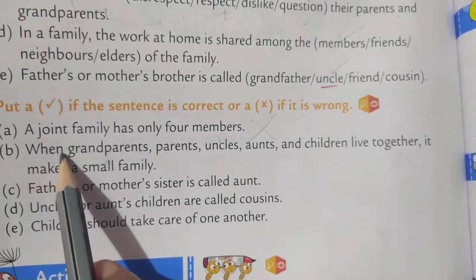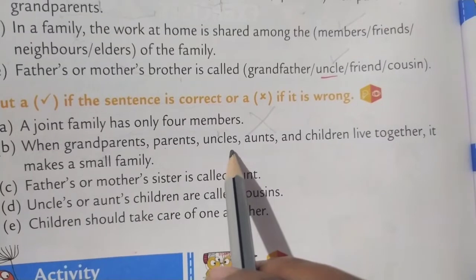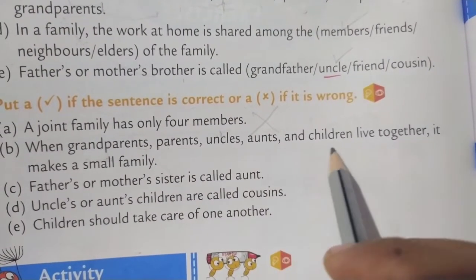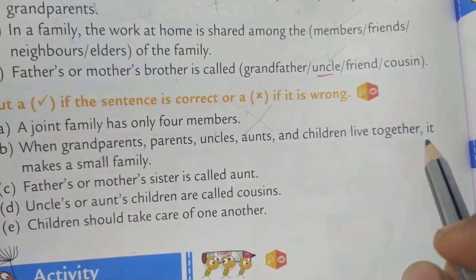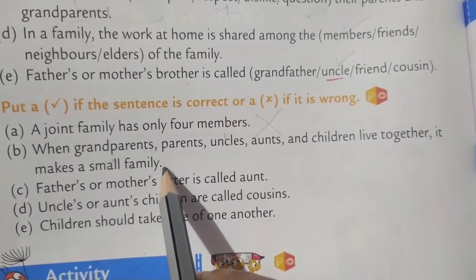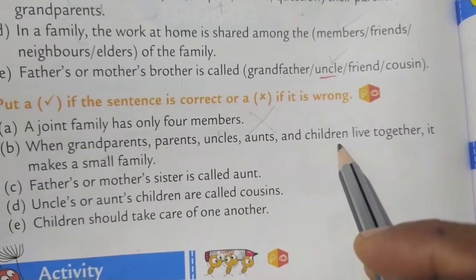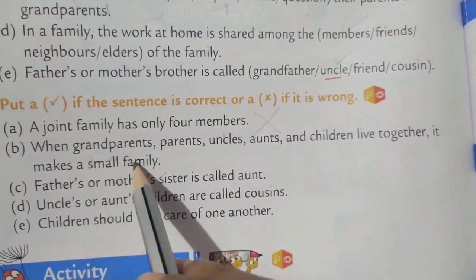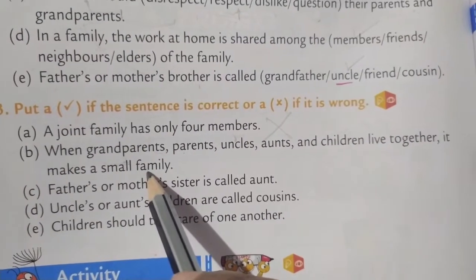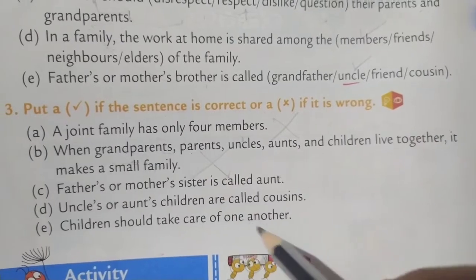Second one: 'When grandparents, parents, uncles, aunts, and children live together, it makes a small family.' Grandparents, parents, uncles, aunts, children — all together, it is not a small family. It is a joint family. Very good. So it is a wrong statement — put cross again.